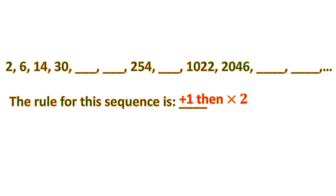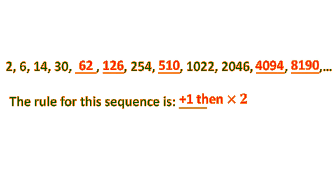Now we fill in the blanks using plus 1 times 2. 30 plus 1 is 31, times 2 is 62. Then 62 plus 1 is 63, times 2 is 126. For the third blank: 254 plus 1 is 255, times 2 is 510. For the fourth blank: 2046 plus 1 is 2047, times 2 is 4094. For the last blank: 4094 plus 1 is 4095, times 2 is 8190.